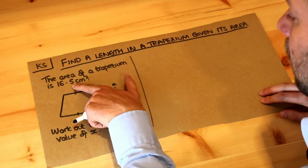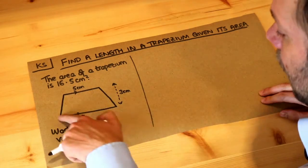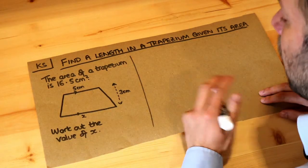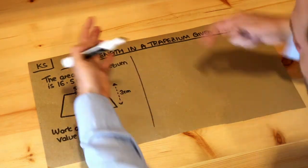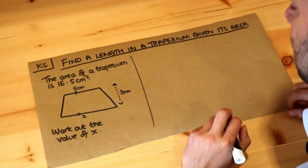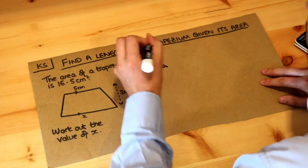Now we're told the area of the trapezium is 16.5 centimeters squared and we want to find the length x. We're used to having all three lengths and using them to find the area, but we want to go backwards. The principle is exactly the same. We can use the area of a trapezium formula and just substitute values in.